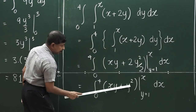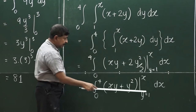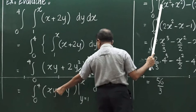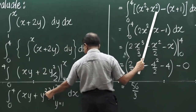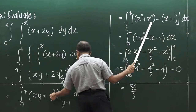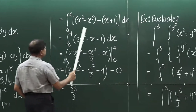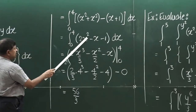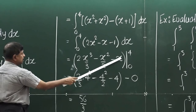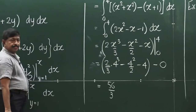Now you have y² with limits from 1 to x. Plug in x first, then 1. When you plug in x for y you get x². So you get x times x² minus, and when you plug in 1 for y you get x plus 1. This simplifies to 2x² minus x minus 1. It is a simple integral — you get x³/3 and then integrate further, plugging in the limits to get the final result.